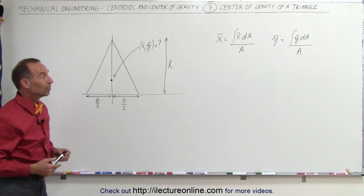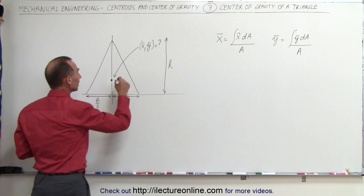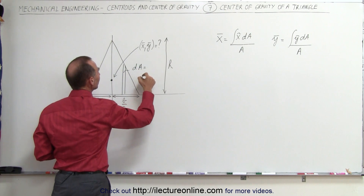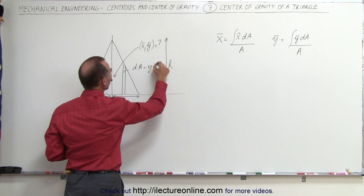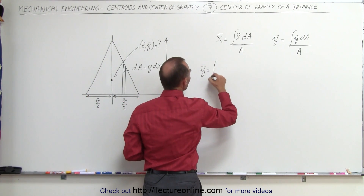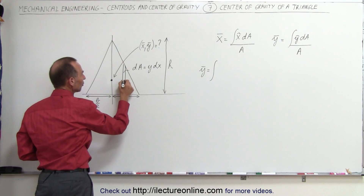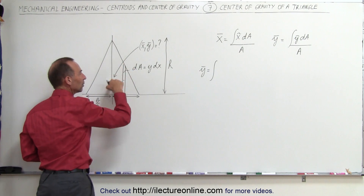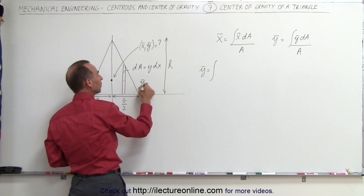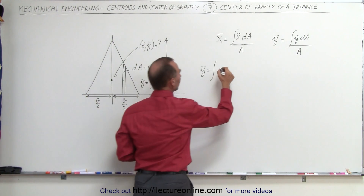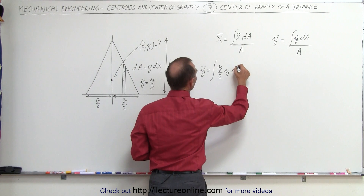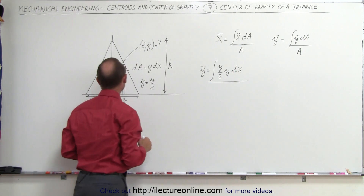The x-coordinate is easy — that's going to be zero. But what about the y-coordinate? We're going to need a small slice here. This small little slice is my dA. My dA is equal to the height y times the width dx. When we find the y-coordinate, we say it equals the integral of the y-coordinate of the small segment, which is halfway between zero and y, so y over 2. The y-coordinate of the center of gravity of that small piece is y divided by 2. That goes into the integral: y/2 times dA, which is y times dx, all divided by the area of the triangle.